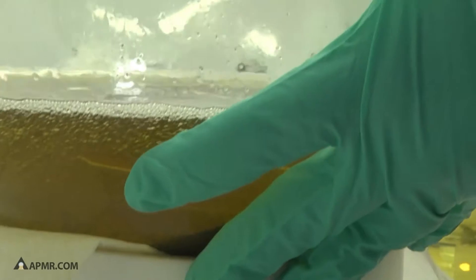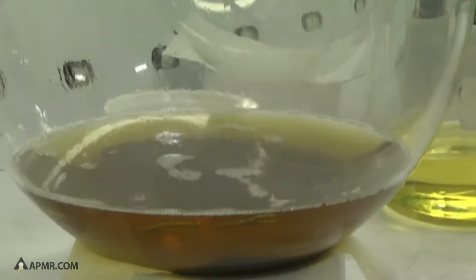Placing our fume evacuation hose on top of the flask so that any fumes given off by this reaction will be contained and processed through our chemical fume scrubber.